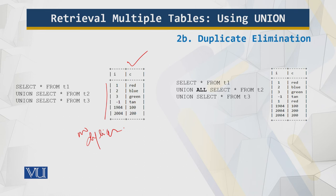If you want to preserve duplicates, follow the first UNION keyword with ALL. So we have what we were trying to eliminate before. Here and here, these are the duplicates.